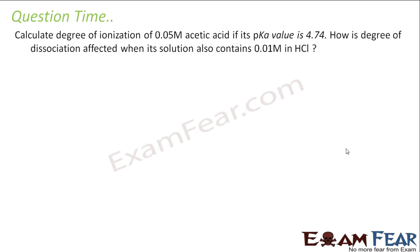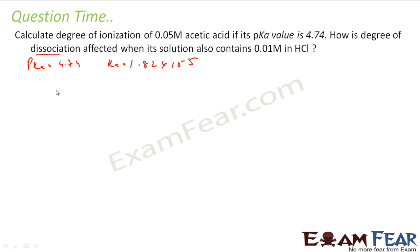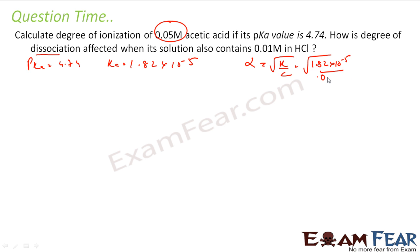Calculating the degree of dissociation is very simple. pKa is given as 4.74, so you can find Ka: Ka = 10^(−pKa) = 1.82×10⁻⁵. With this, the degree of dissociation alpha = sqrt(Ka/c). We have Ka = 1.82×10⁻⁵ and c = 0.05. Solving this gives alpha = 1.9×10⁻².